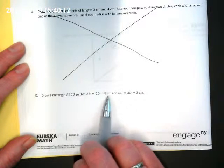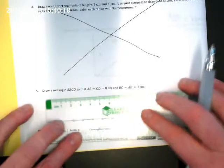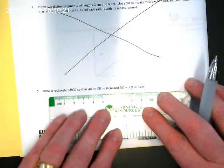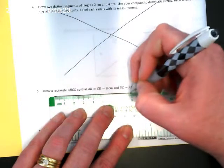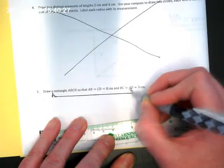We actually don't have a compass to use, so we're going to cross off number 4 and go down to number 5. This says to draw a rectangle that we're going to label ABCD, so that AB is equal to CD, which is equal to 8 centimeters.